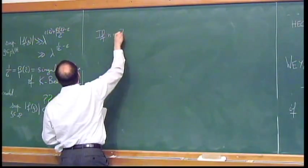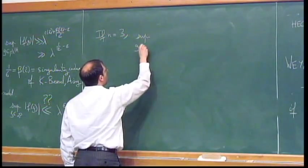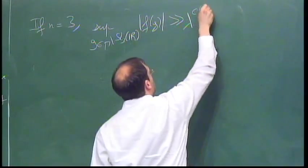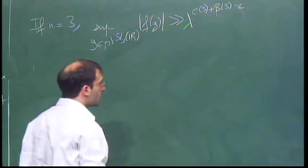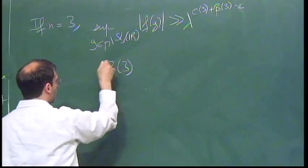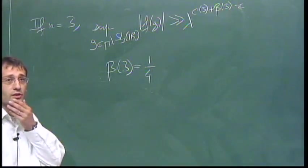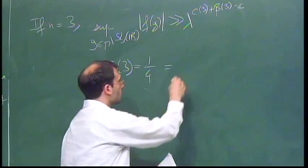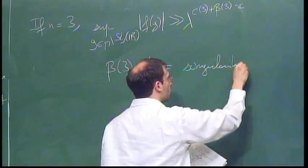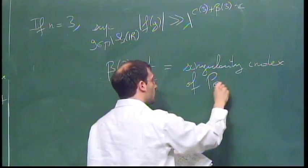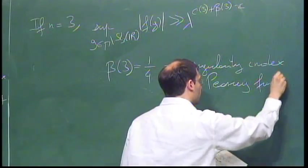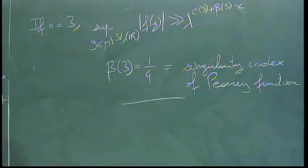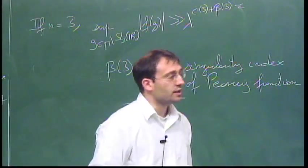OK, so if n is 3, we know also something similar. So this function is at least lambda to the c_3 plus beta_3 minus epsilon. And beta_3 now is one-fourth. And what's one-fourth? It's a singularity index of another function, the Pearcey function, which is a higher singularity. So singularity index of Pearcey function. So I will explain this right now.